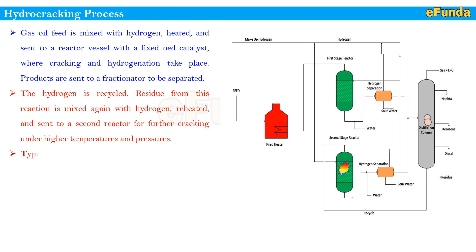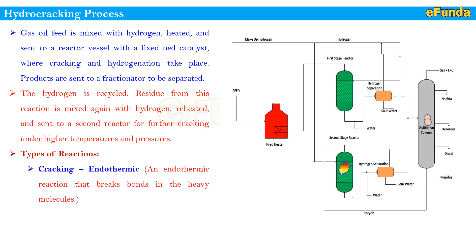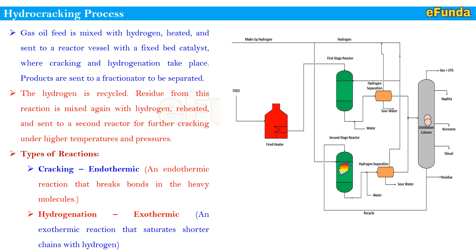The types of reactions that occur inside the hydrocracking process are: first, cracking — an endothermic reaction that breaks down bonds in heavy molecules; second, hydrogenation — an exothermic reaction that saturates shorter chains with hydrogen. We have seen in previous slides how the long chain is separated into shorter chains with hydrogen added. These are the reactions that happen during the hydrocracking process across the first and second stages.